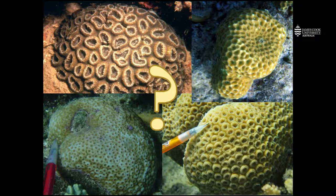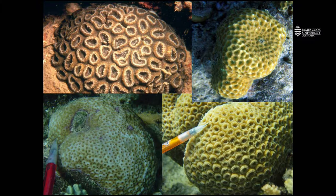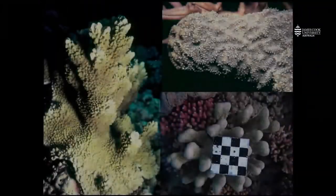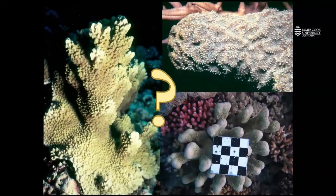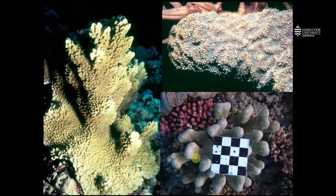These corals are growing outwards and upwards, leaving behind a solid dense skeleton. And these corals are forming thick branches with the polyps or coralites around the edges or outside of the columns.